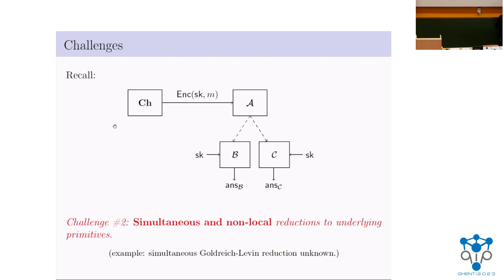The second related challenge is that when we use one crypto primitive to build another, we need to design security reductions. In this setting, we need what are called simultaneous or non-local reductions, because it's not one adversary breaking the scheme — we have two adversaries, Bob and Charlie, simultaneously breaking something, and we need to leverage both simultaneously to break some assumption. Non-local reductions are harder to design. For example, a Goldreich-Levin reduction is very popular in classical cryptography, but a simultaneous version of Goldreich-Levin seems like a very hard problem.